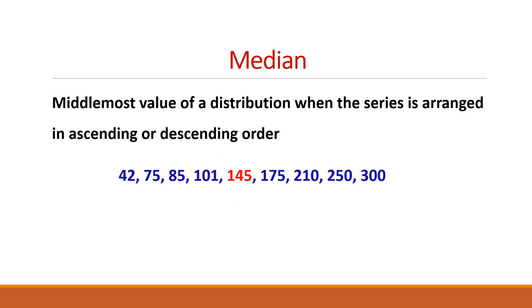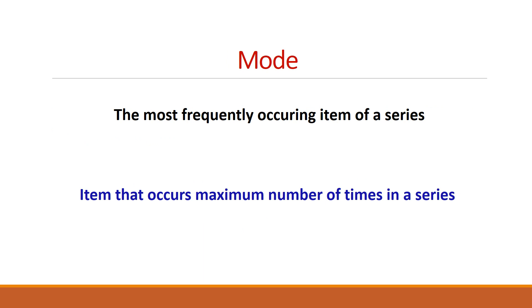So, in this case, 145 is the median. Moving to the mode. It is the most frequently occurring item of a series. The item that occurs quite often. That item is called the mode. It is that which occurs the maximum number of times in a group of data.